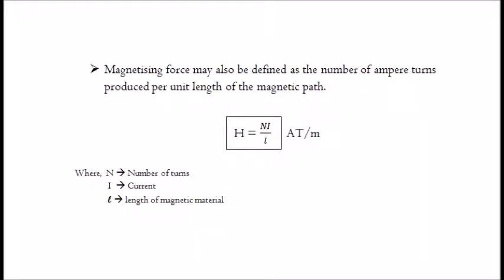Magnetizing force may also be defined as the number of ampere-turns produced per unit length of the magnetic path. It is given by: H equals N multiplied by I, whole divided by l, where N is the number of turns, I is the current, and l is the length of magnetic material.